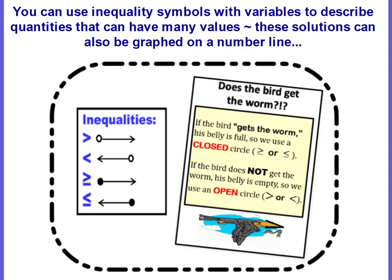We can use inequality symbols with variables to describe quantities that can have many values. These solutions can also be graphed on a number line. This is a summary of what we just talked about — the inequalities and how you would represent the lines on a number line. Here's a helpful image: if the bird gets the worm, his belly is full, so we use a closed circle. This is for when you have the equal to's. If the bird does not get the worm, his belly is empty, so we use an open circle.